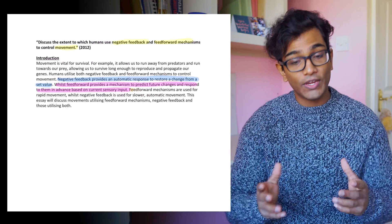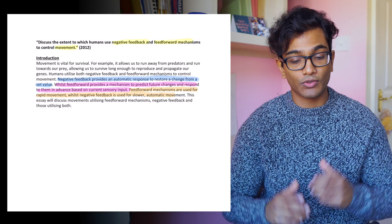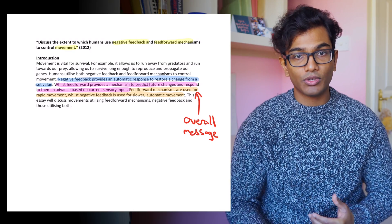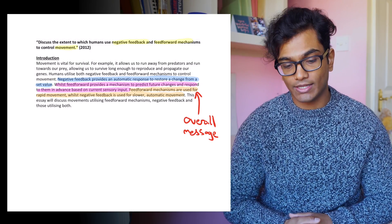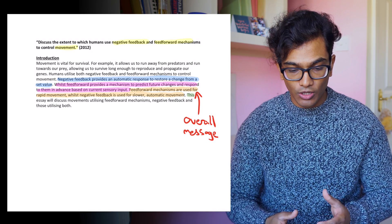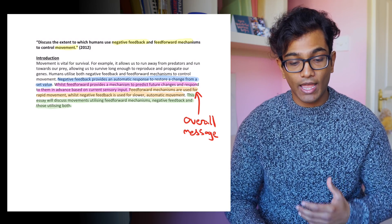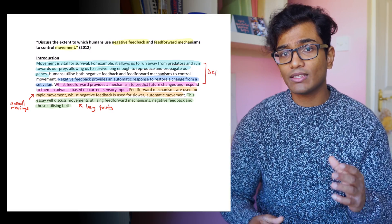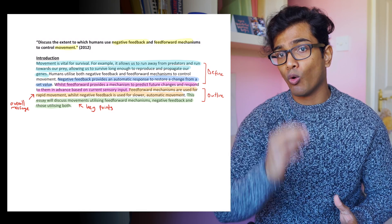A lot of students skip this part because they feel like they're just going to repeat themselves later in the essay. However, don't do that — always outline what you're going to cover to set the examiner up to know what to expect. I would use one sentence to convey my main message and a second sentence to cover the key points leading to that overall message. For example, sentence one might be: 'Feedforward is used for rapid movement and negative feedback is used for slower automatic movement.' Sentence two: 'The essay will cover movements utilizing feedforward mechanisms, negative feedback, and those utilizing both.'